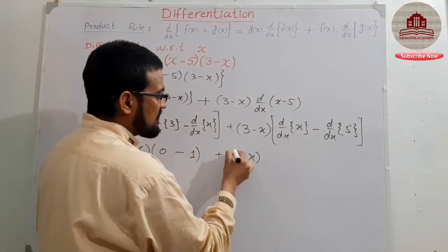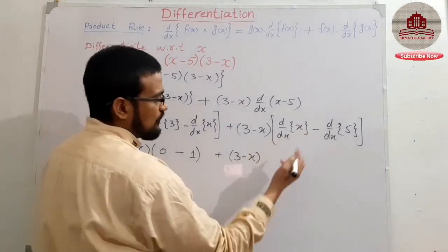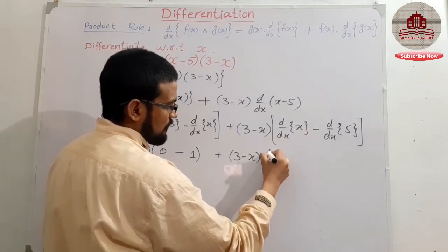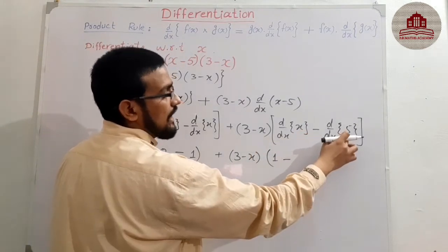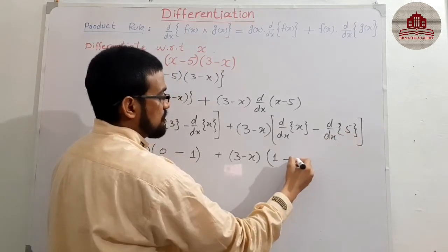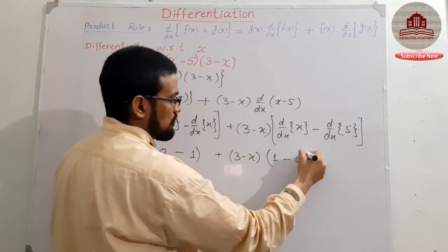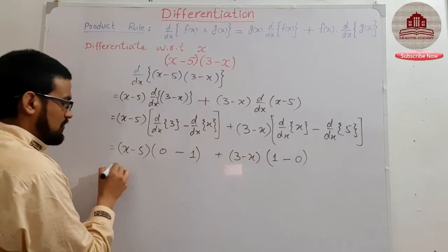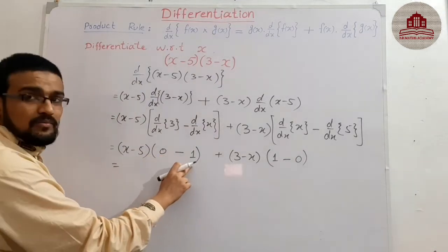(3 - x) as it is, derivative of x is equal to 1, minus derivative of 5. 5 means constant, so 0. So 0 minus 1 is minus 1.